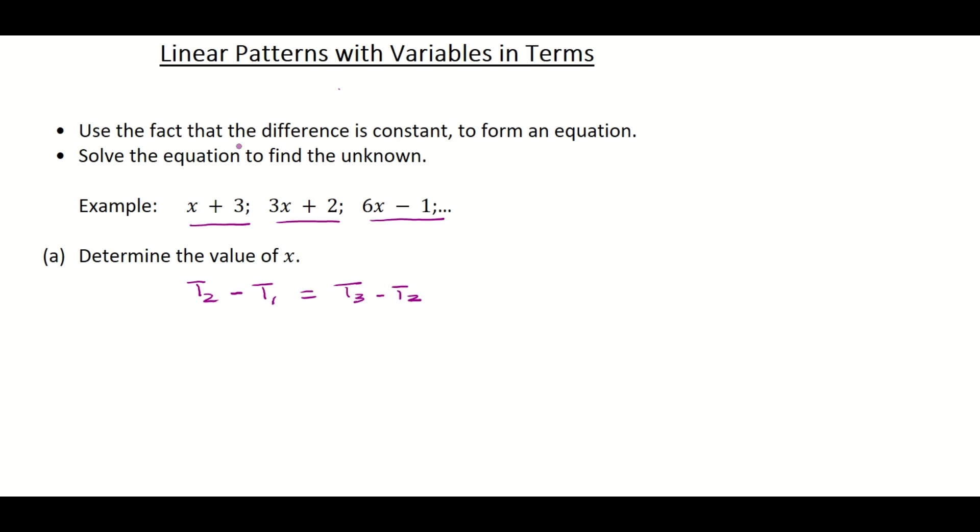Then you just fill in the relevant terms. Remember this is term 1, term 2, and term 3. So the first thing we do is write down term 2, which is 3x plus 2, minus term 1 in a bracket because we've got a minus sign here. It will affect our signs inside the bracket. So term 1 is x plus 3, is equal to term 3, which is 6x minus 1, minus term 2. Again we put term 2 inside a bracket, 3x plus 2. Now we just get rid of brackets.